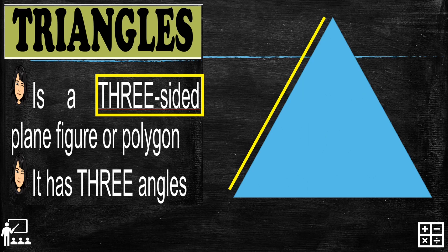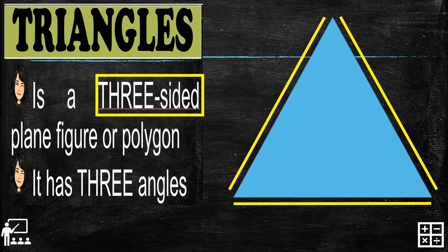First, let me show you the sides of a triangle — there are three. The first side is here, the second side is next, and the last side is at the bottom. So a triangle has three sides, making it a three-sided plane figure or polygon.